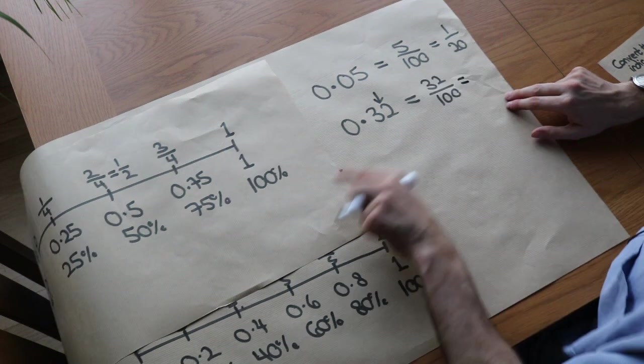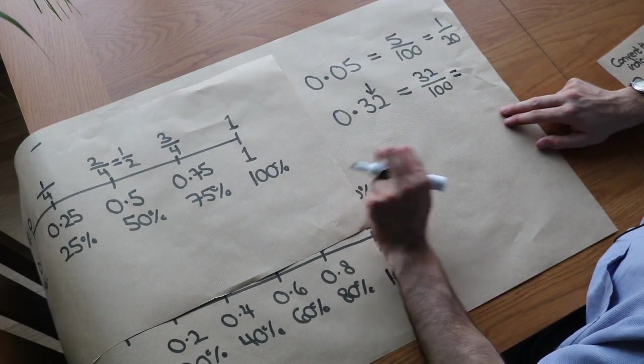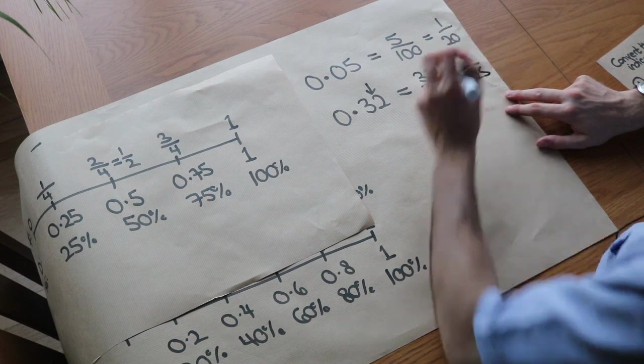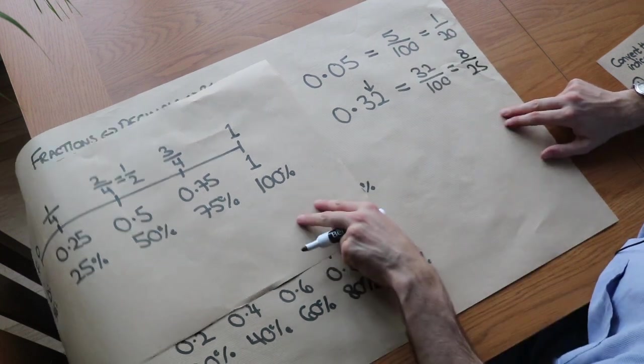And then we could simplify that. They both divide by four. So that gives you eight over 25. So 0.32 is 8 twenty-fifths.